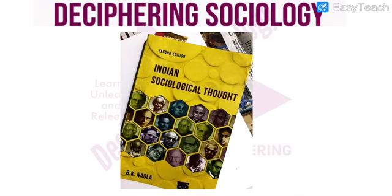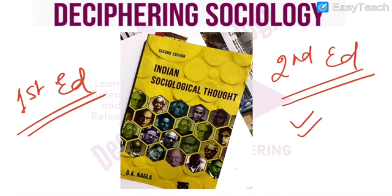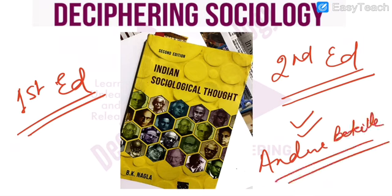This is 'Indian Sociological Thought' by BK Nagala, and this is the second edition that I have on this screen. There are a few thinkers which have been added in the new edition which are not there in the first edition. Therefore, we would advise you to please get the newer edition so that you do not miss out on important thinkers. For example, we have a thinker like Andhra Bete — his perspective is not mentioned in the first edition and he is a very important thinker. So you should get his perspective from the second edition of BK Nagala.